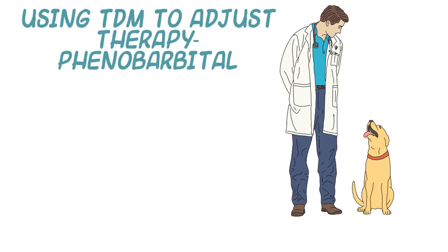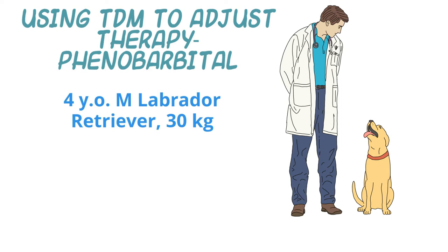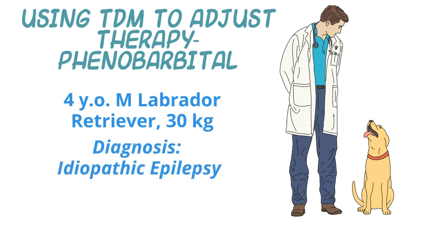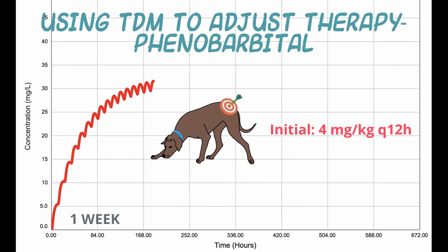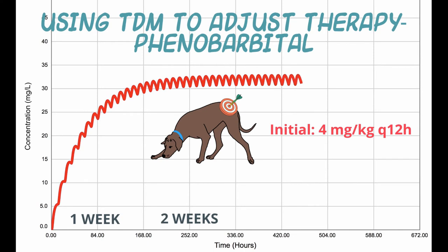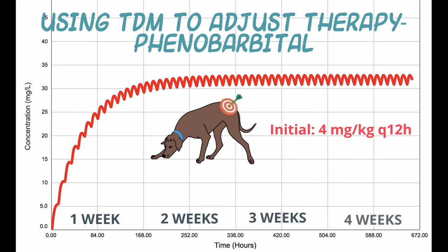Let's look at the case of a four-year-old male Labrador retriever, 30 kilograms, with a diagnosis of epilepsy made five months before presentation. The dog responded to a therapeutic regimen of 4 milligrams per kilogram phenobarbital every 12 hours. In this simulation, it's as if we knew all the blood sample concentrations for a period of about one month. The textbook half-life for phenobarbital can range anywhere from 20 to 48 hours.